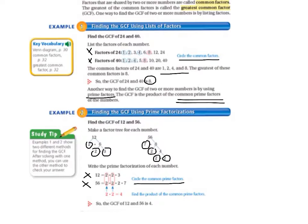So then the directions are to circle the common prime factors. They're considered common if they're in both prime factorizations. And since 2 is in both prime factorizations 2 times, we list it 2 times. So 2 times 2, and then we multiply that. 2 times 2 equals 4. So the greatest common factor of 12 and 56 is 4.